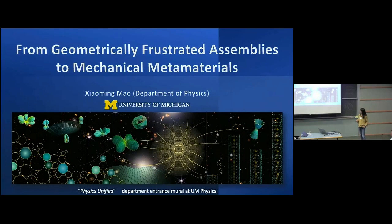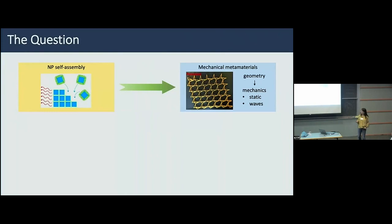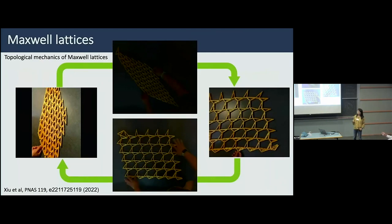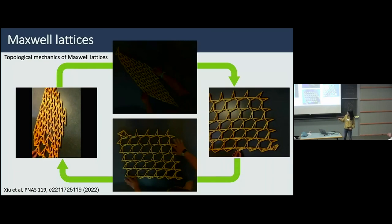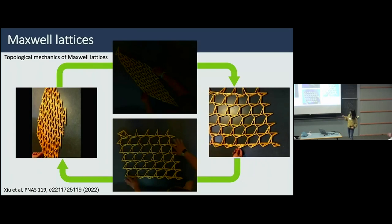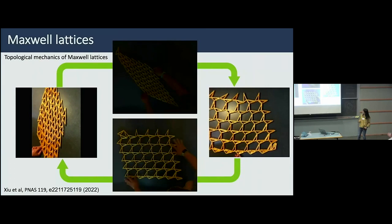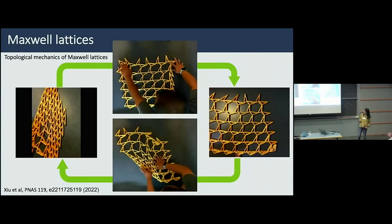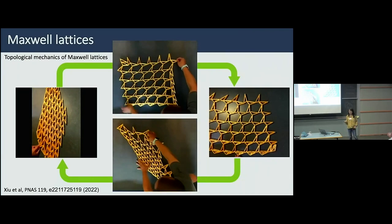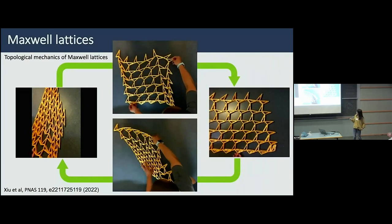Mechanical metamaterials are engineered materials whereby controlling the geometry and structure we can obtain unusual mechanical properties, both for static response and for waves. As an intuitive example, here is a mechanical metamaterial we made in this collaboration — a topological Maxwell lattice. In one phase, the edge of this lattice is soft; in a different phase of the same material, this edge becomes rigid. You can reversibly transform this lattice between two states by introducing bi-stability.